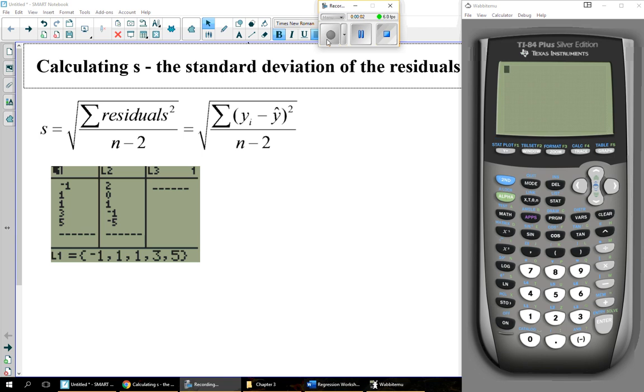I would like to do a short tutorial on how to calculate s, the standard deviation of the residuals. I have some data here from problem 43 out of the TPS book, but it doesn't really matter. You can follow along with whatever data you have.